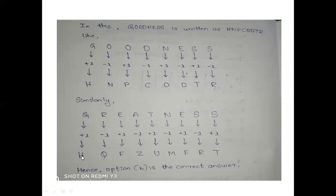So, greatness, G+1 is H, R-1 is Q, E+1 is F, A-1 is Z, T+1 is U, N-1 is M, E+1 is F, S-1 is R, and S+1 is T.